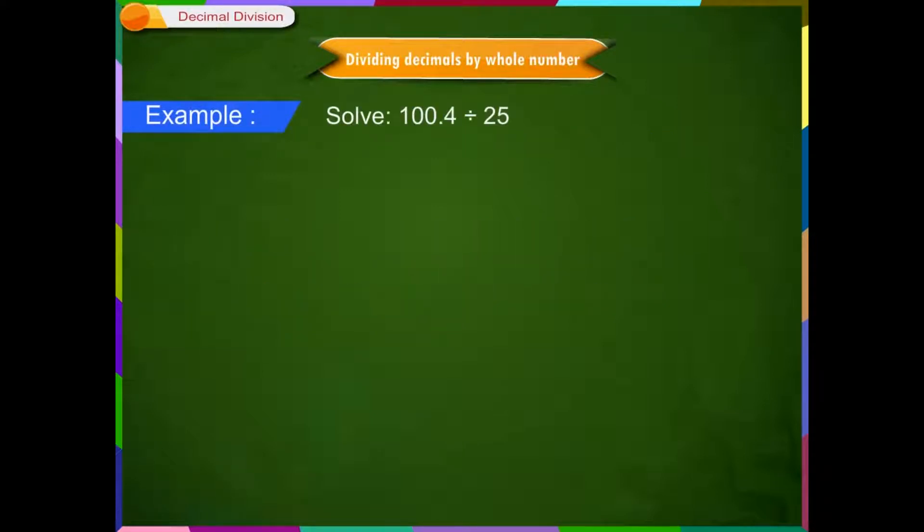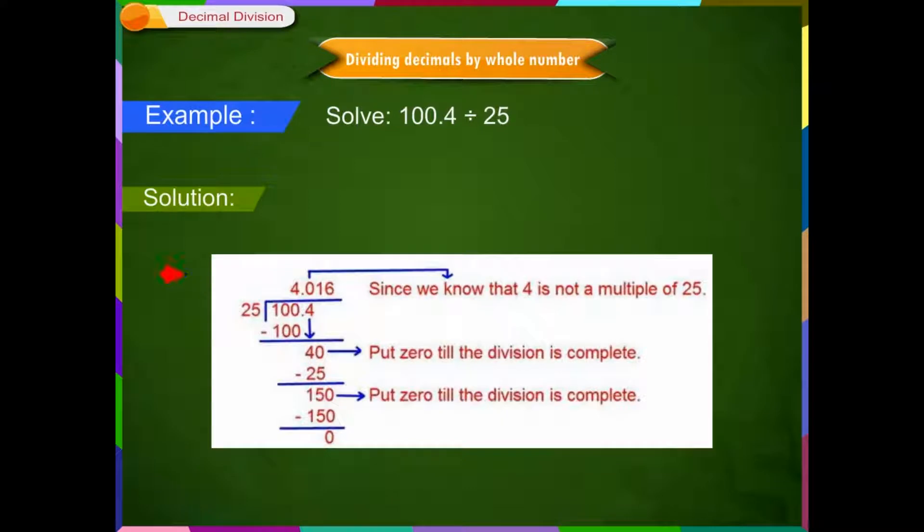Example 1. Solve 100.4 divided by 25. Solution Step 1: First, let us divide 100 by 25. The quotient is 4.